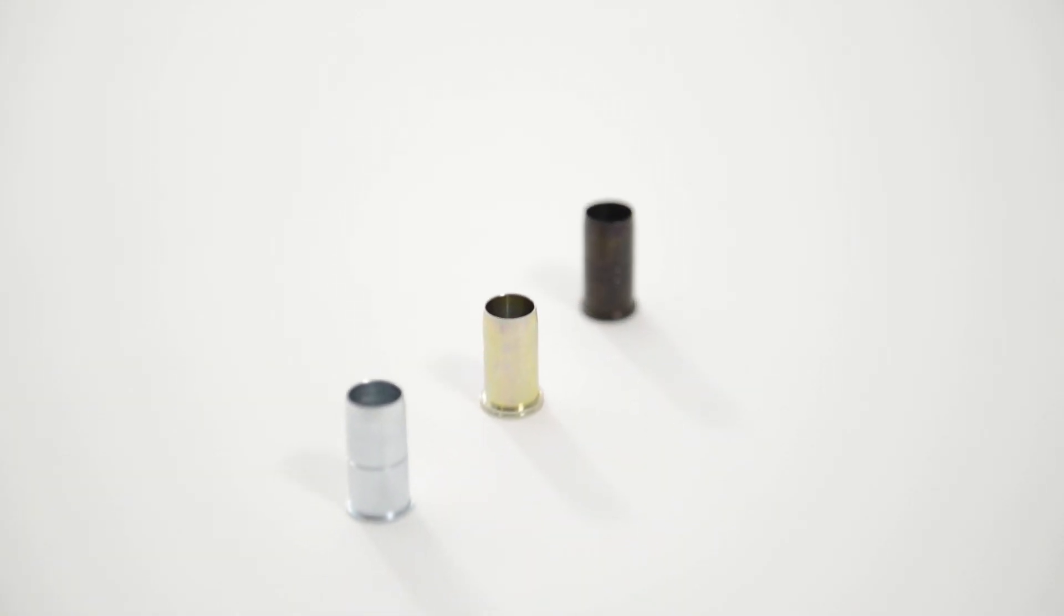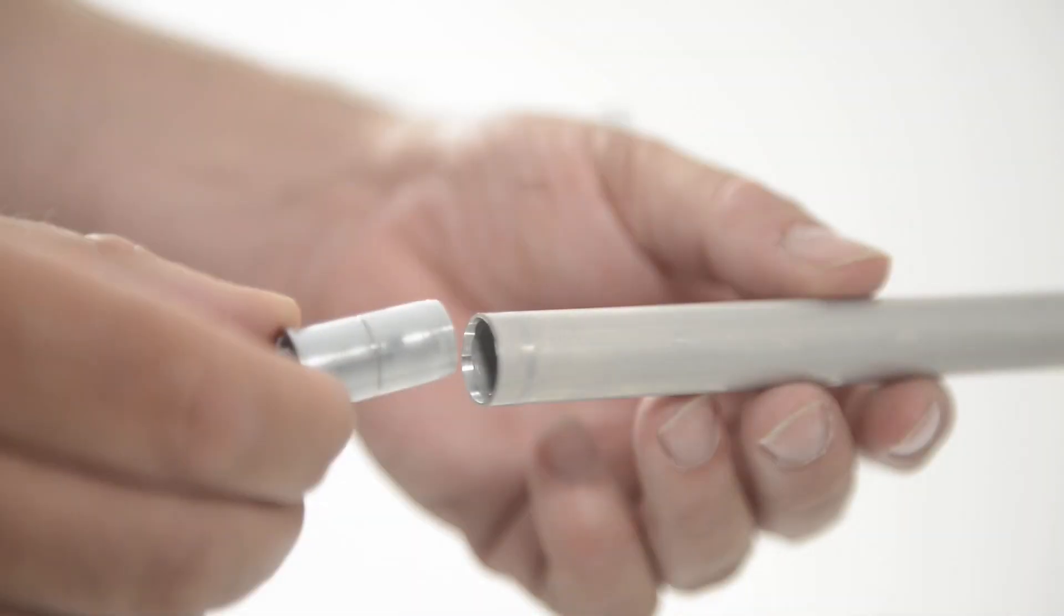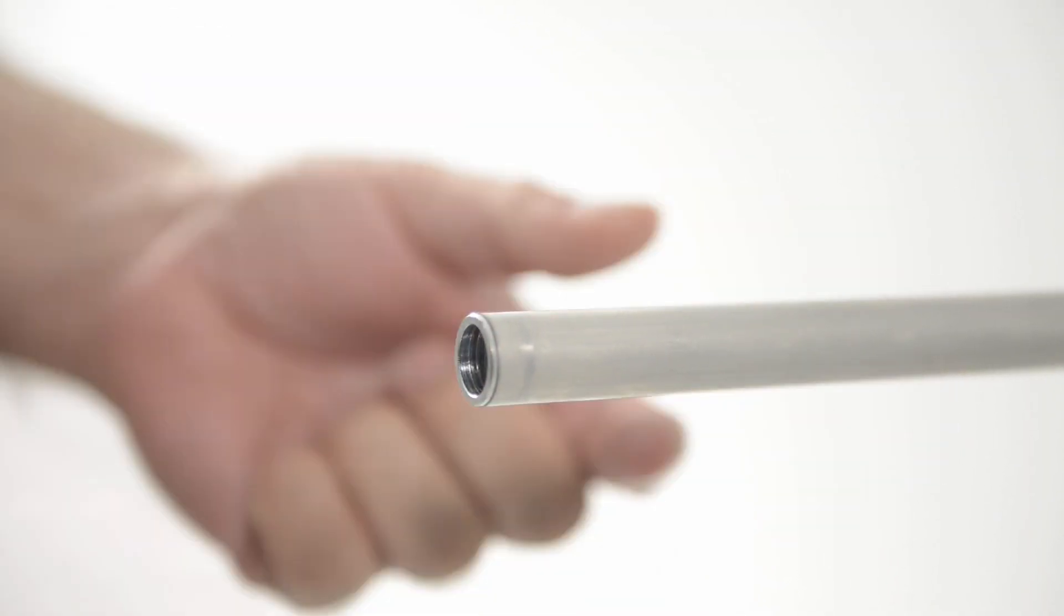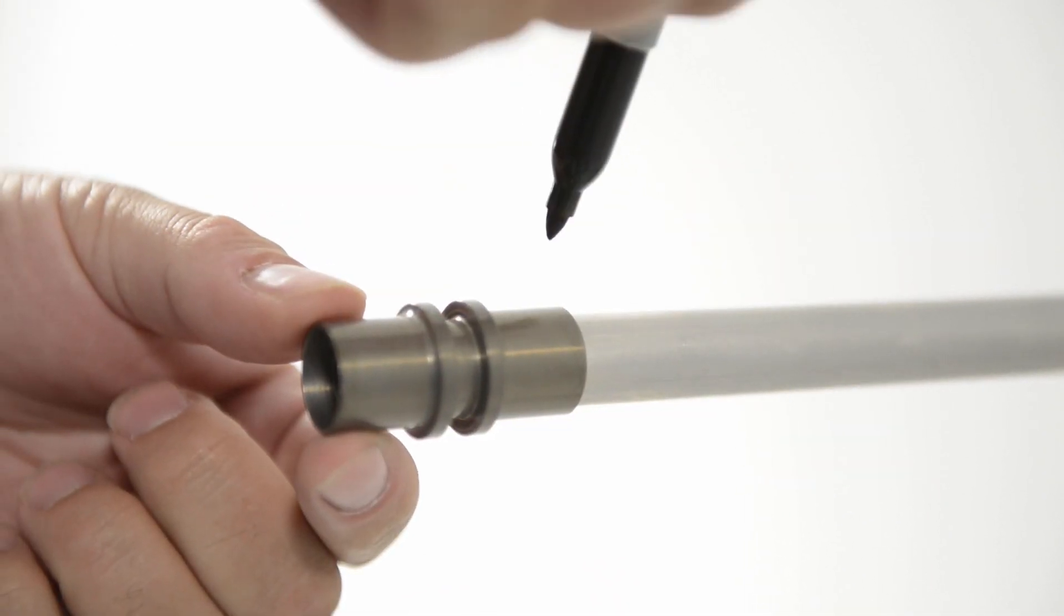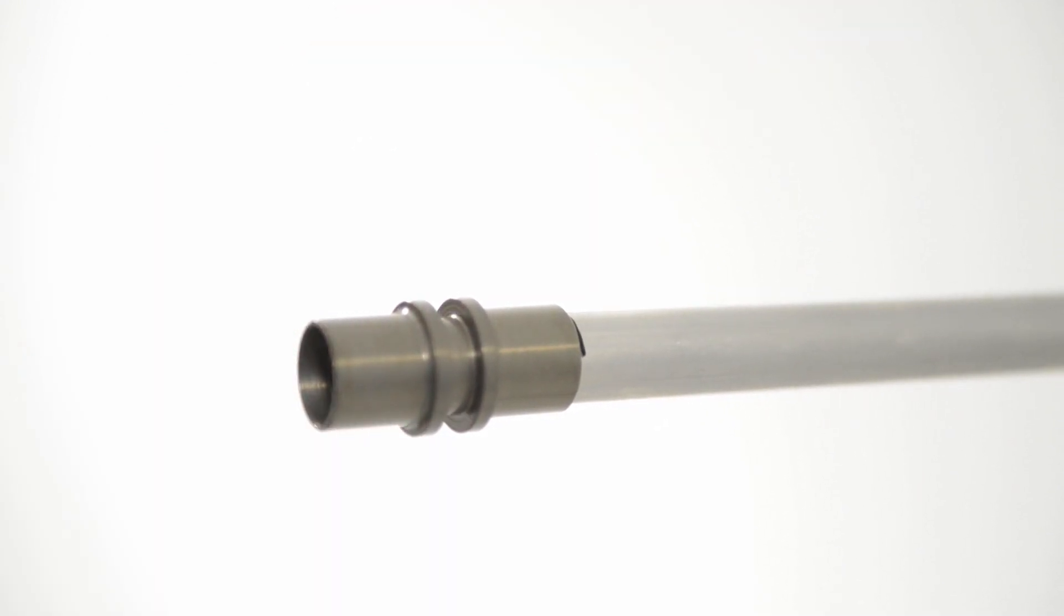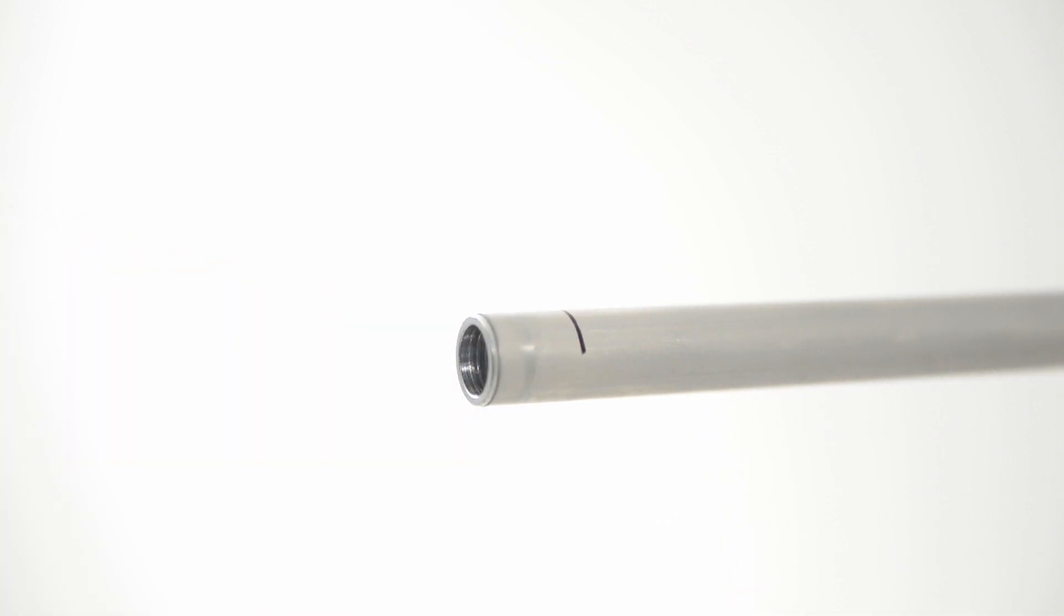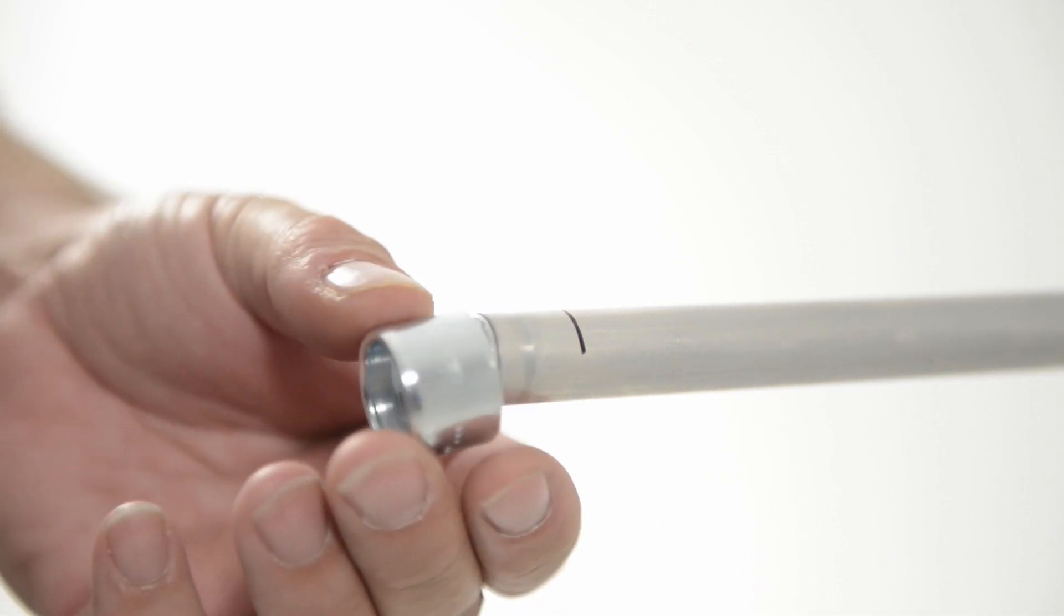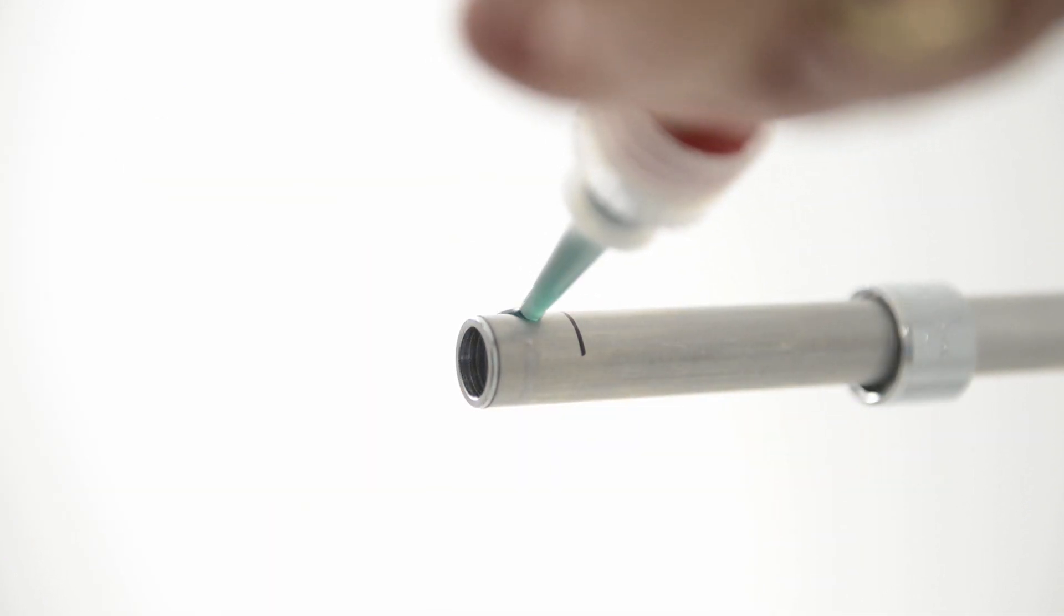Select the correct insert for the pipe being used. In this instance, five-eighths of an inch aluminum straight pipe. Place the insert into the pipe. Fix the Reflok coupling onto the end of the pipe, making sure that the pipe is fully home, and then mark the pipe. Slide the nut onto the pipe, making sure that the beveled edge is pointing towards the end of the pipe. Apply Reflok preparation fluid to the end of the pipe.